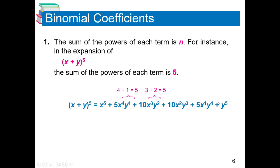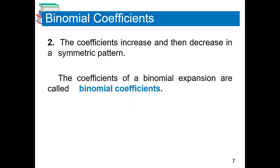We've verified that all exponents sum to 5. For x the powers go 5, 4, 3, 2, 1, 0; for y the powers go 0, 1, 2, 3, 4, 5. Also, the coefficients of a binomial expansion increase then decrease in a symmetric pattern. These coefficients are called binomial coefficients.